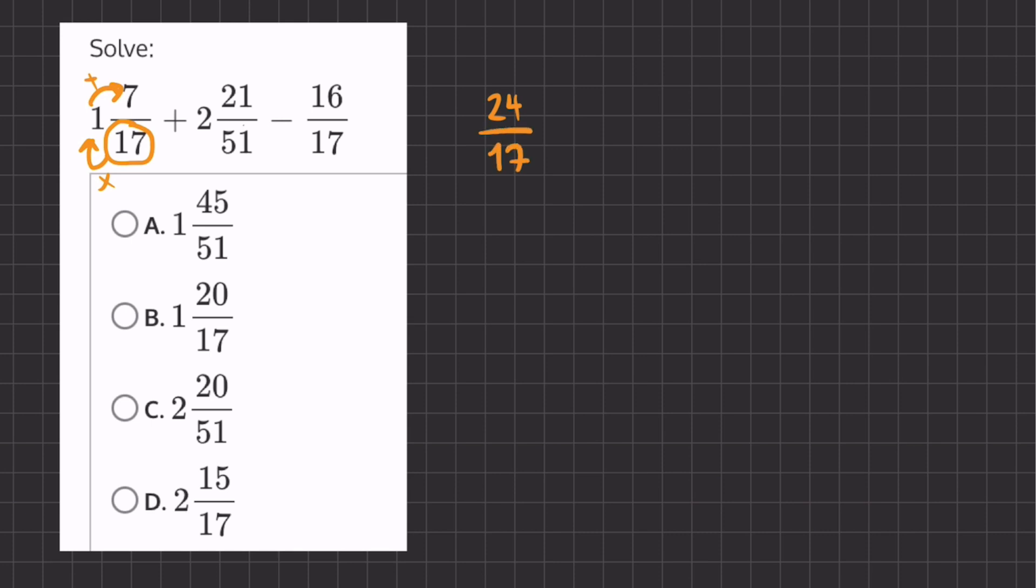Now we'll do the same for this fraction. We'll multiply 51 times 2, and then we'll add 21 to that. So 51 times 2 is 102, and if we add 21, we will get 123 over 51.